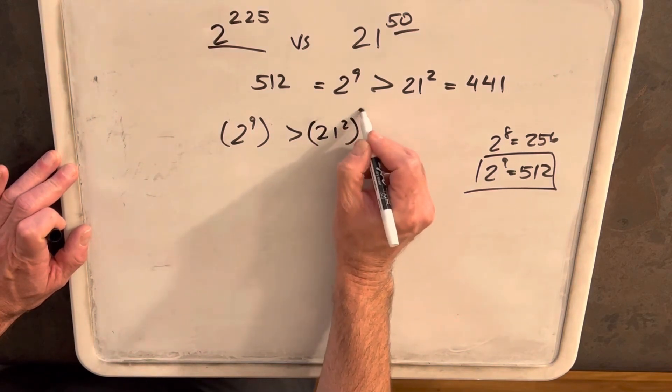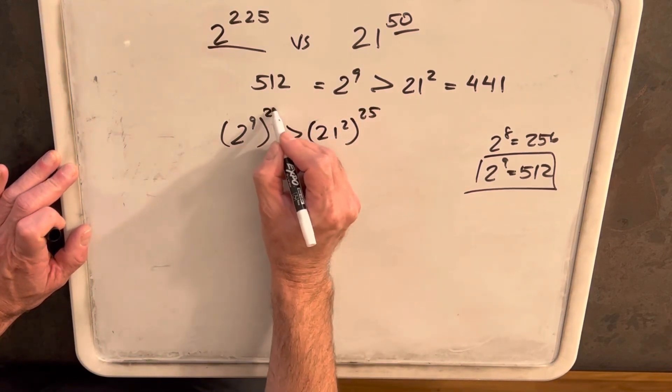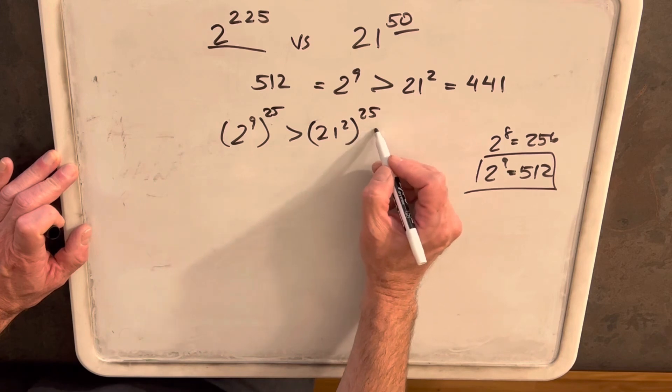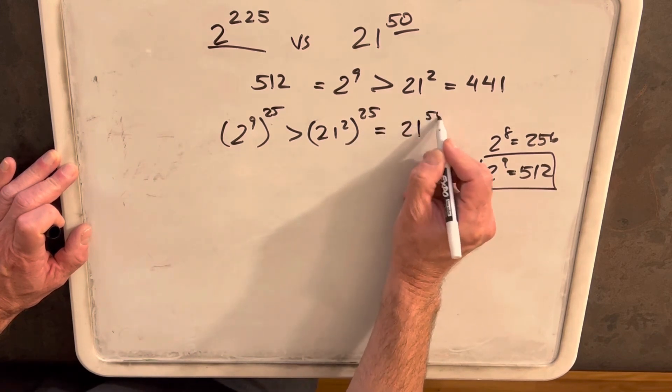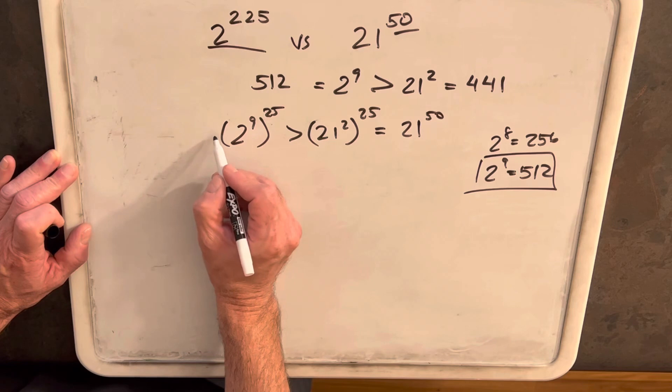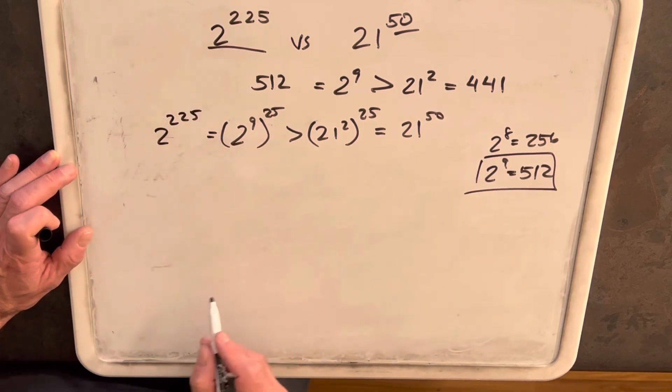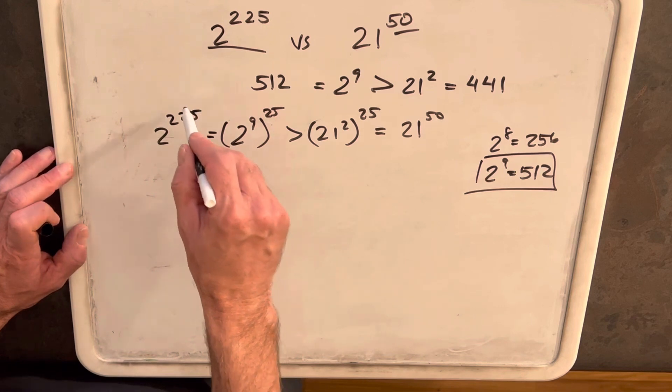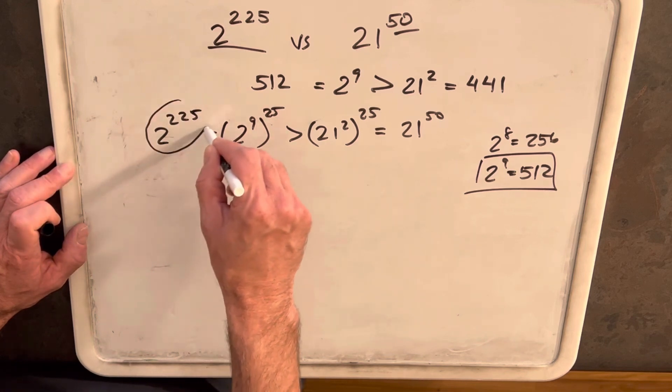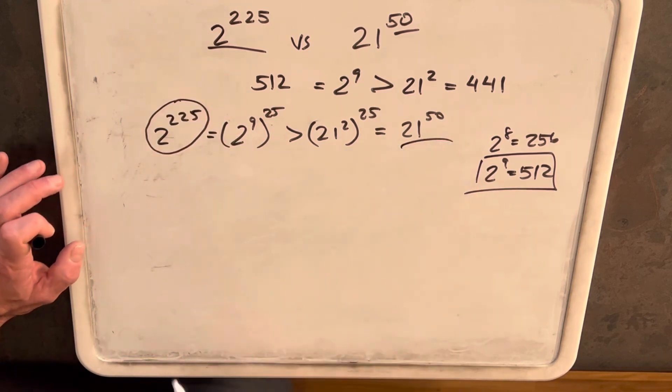Take both sides and raise it to the 25th power, and then this side is actually equal to 21 to the 50, and this side is actually equal to 2 to the 225. So that works. We can say that 2 to the 225 is greater than 21 to the 50.